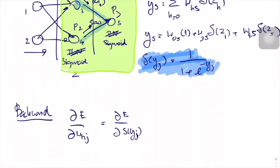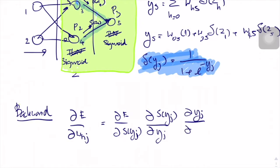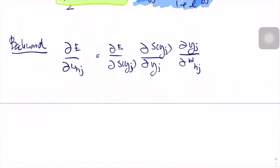We apply the chain rule to find the partial differentiation of E with respect to w_hj. This decomposes into: the partial differentiation of E with respect to σ(y_j), the final output; times the partial differentiation of σ(y_j) with respect to y_j, the sigmoid differentiation; and finally the partial differentiation of y_j with respect to w_hj. This makes finding the backward path easier.